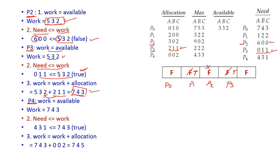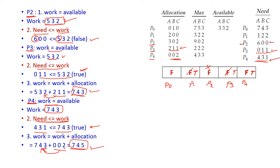Now we try to execute P4. Current Work is [7, 4, 3]. We test whether Need[P4] is less than or equal to Work. The need for P4 is [4, 3, 1], which is less than [7, 4, 3]. So we can easily allocate that resource to P4 — P4 executes successfully and Finish[P4] is set to true. The allocated resources for P4 [0, 0, 2] are released, and Work is updated to [7, 4, 5].